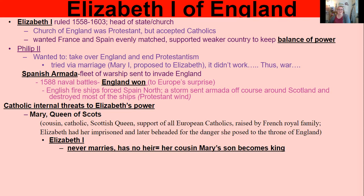Philip II wanted to completely take over England and end Protestantism. He tried this through marriage first with Mary I, then tried with Elizabeth, but that didn't work. So he waged war and sent the Spanish Armada — the fleet of warships — to invade England. There would be a lot of naval battles and England would win, to Europe's complete surprise, because the Spanish Navy was the greatest. The English used fire ships and strategy to force the Spanish Armada north, where a storm destroyed most of their ships.